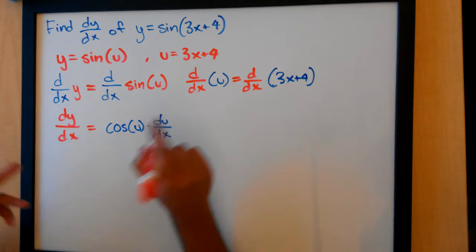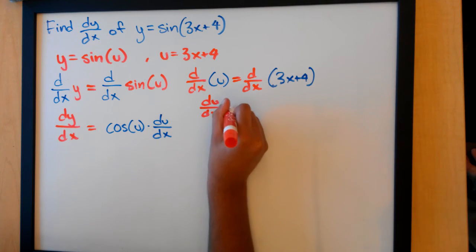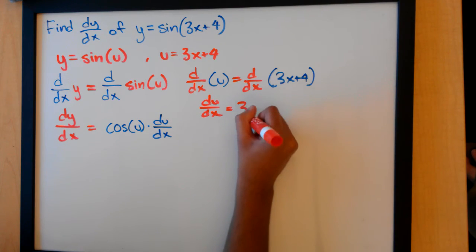we find that du over dx equals just the derivative of 3x plus 4, which is 3.